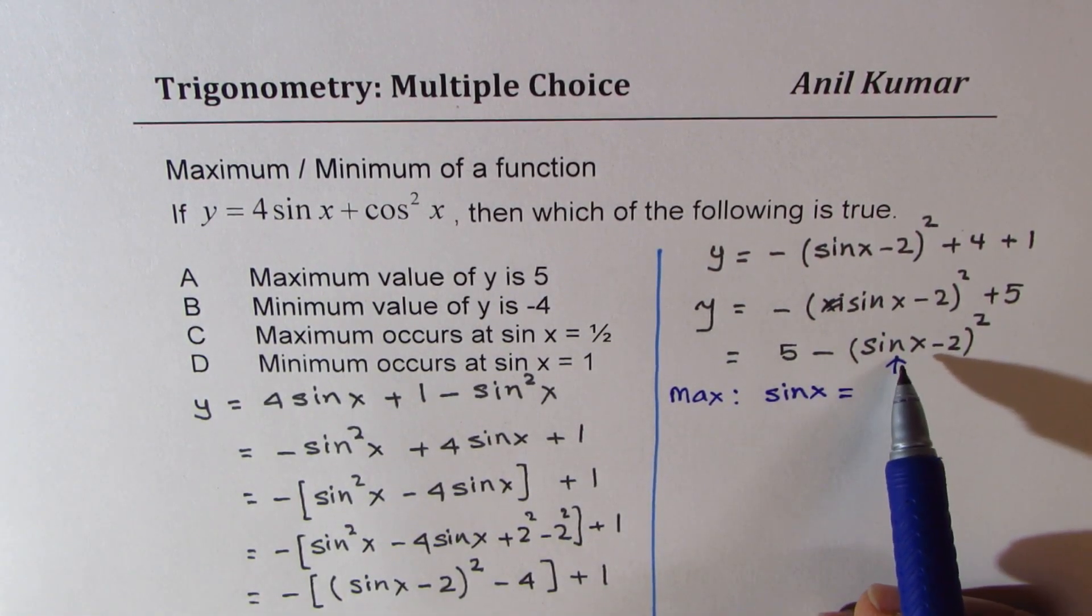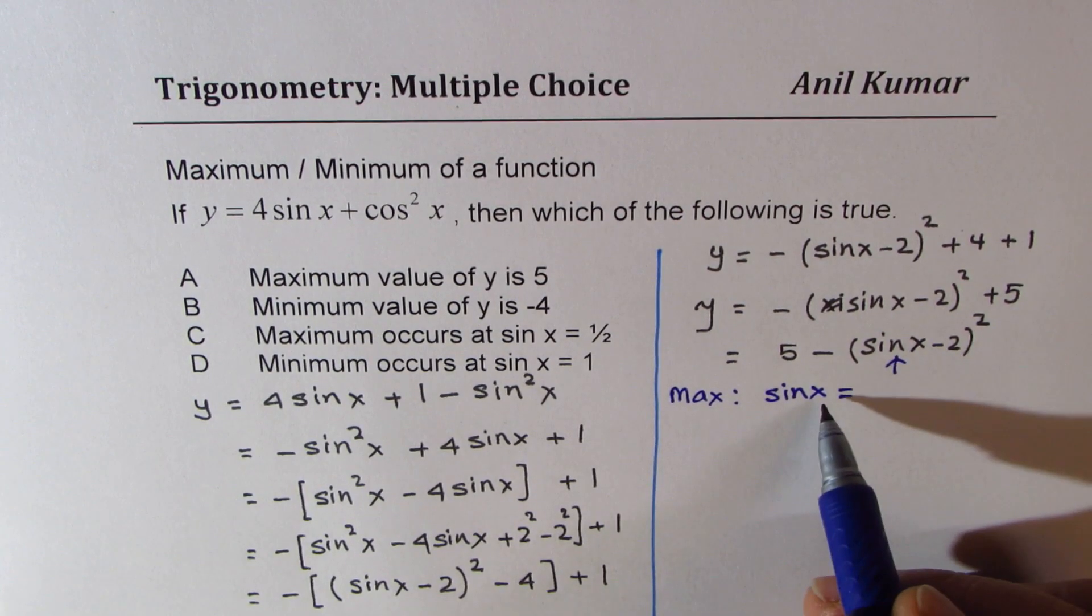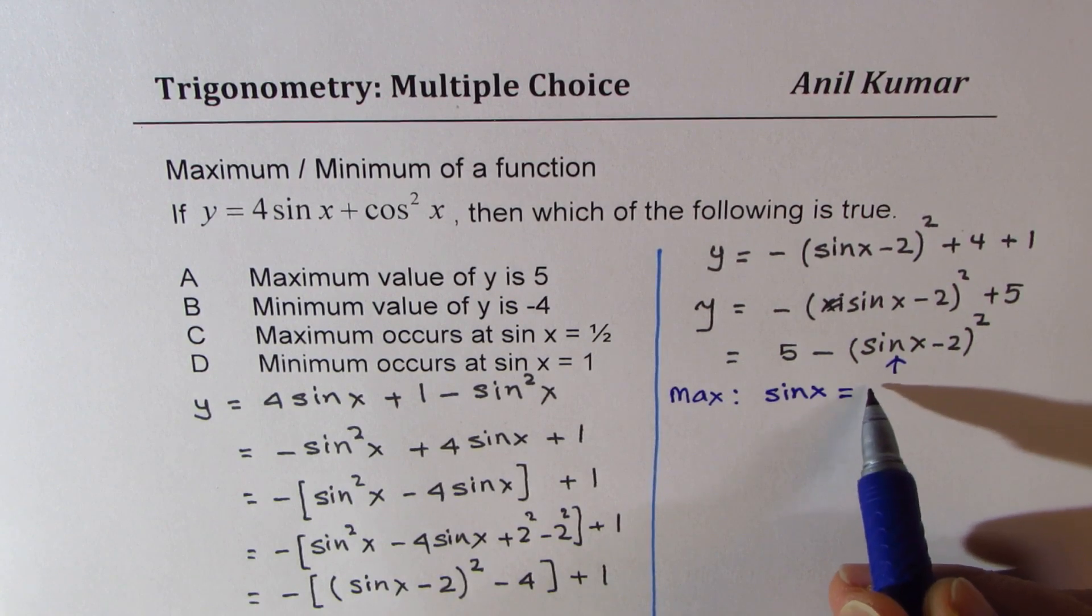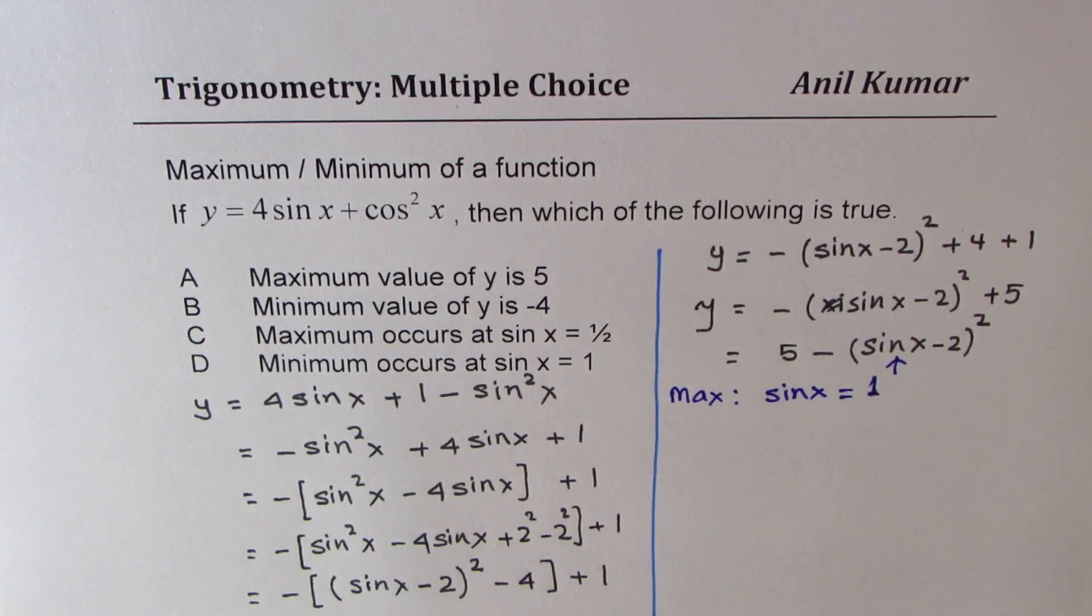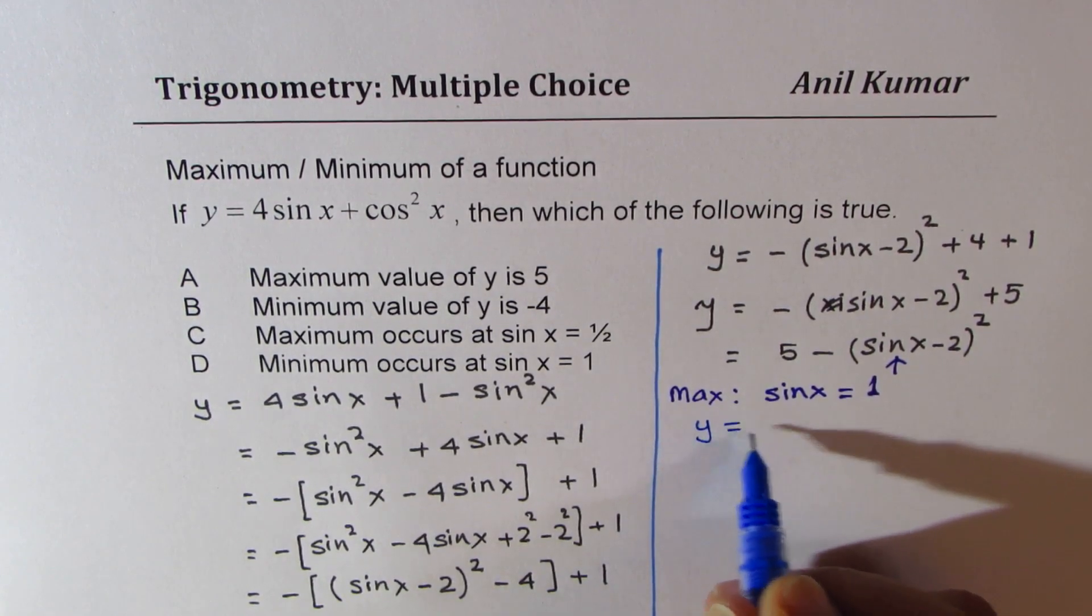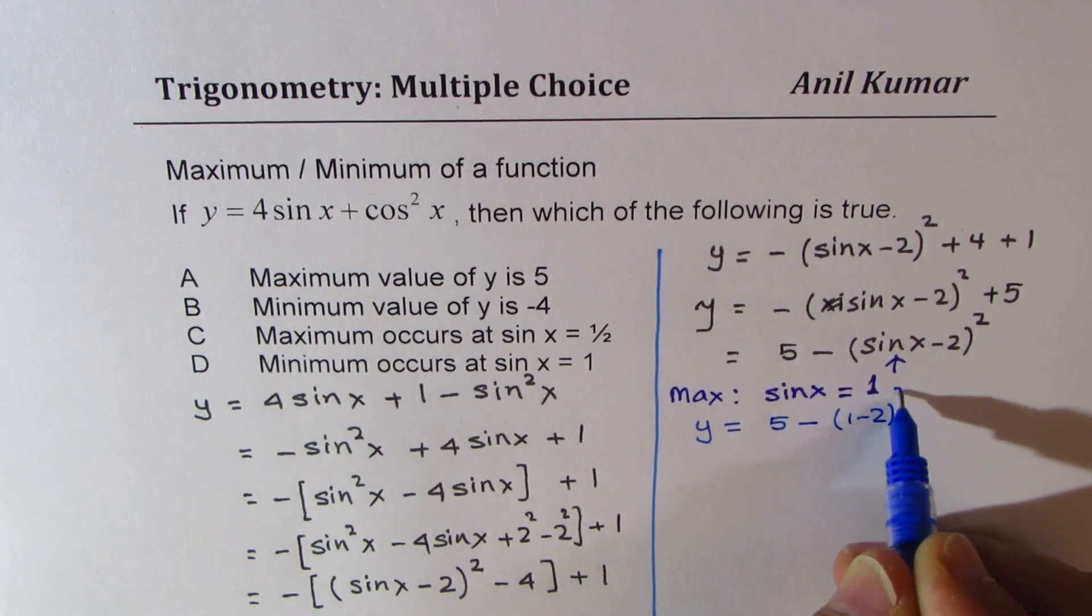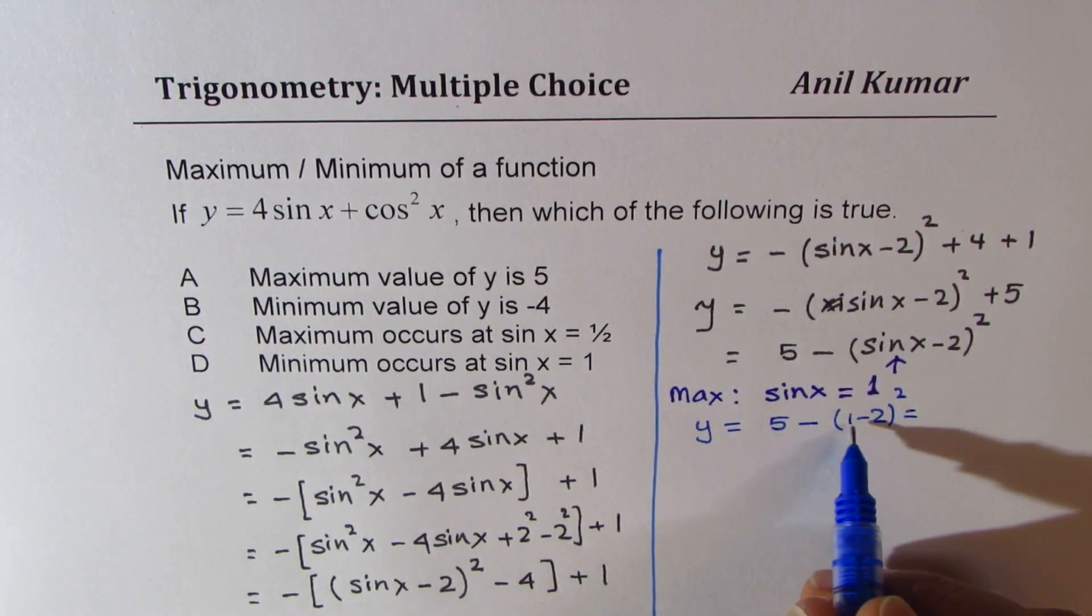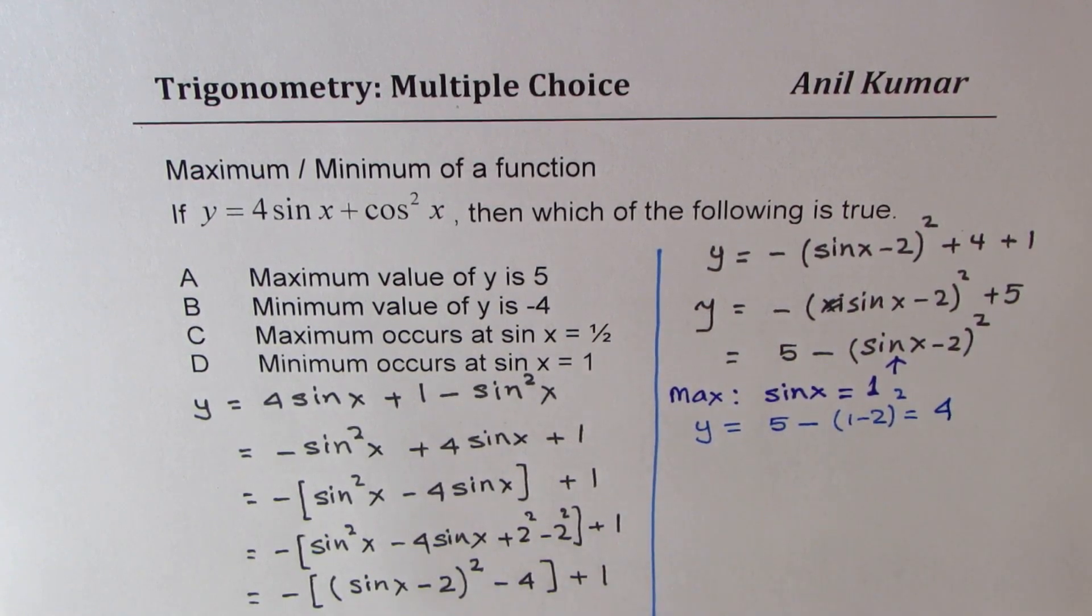So if sin x is equal to 1, in that case, what we get here is, let's calculate. So if I put sin x as 1, I get this as y equals 5 minus 1 minus 2 whole squared, which is, this is 1. So 5 minus 1 is 4. Do you see that? So we get this.